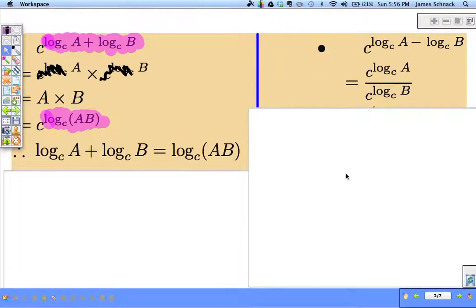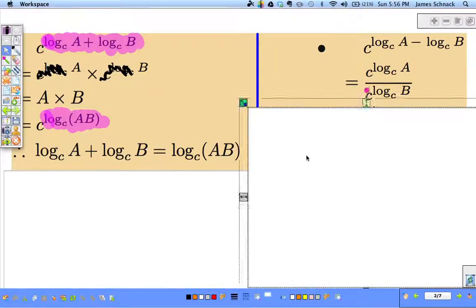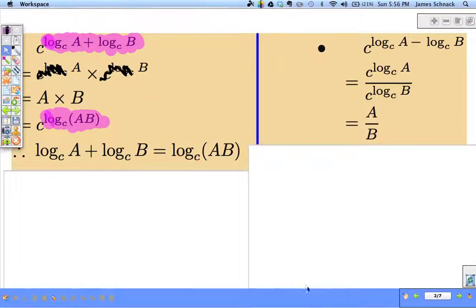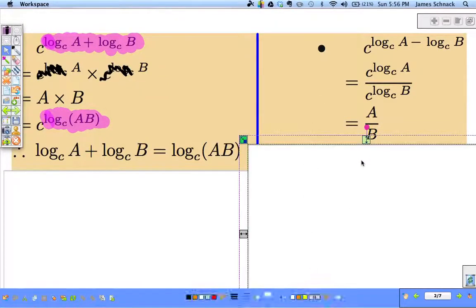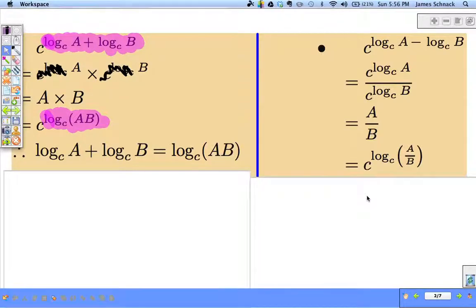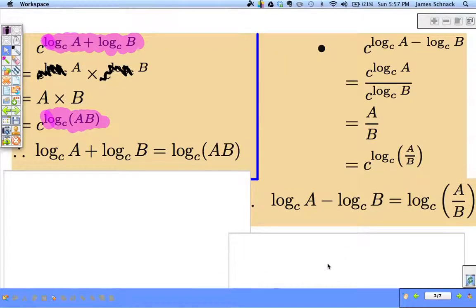Alright, so first step. Subtracting the exponents means we can divide two powers, the C log C's go away, and then we can bring the log back in and make the thing that we're logging the A over B. So, C log C of A minus log base C of B equals log base C of A divided by B.